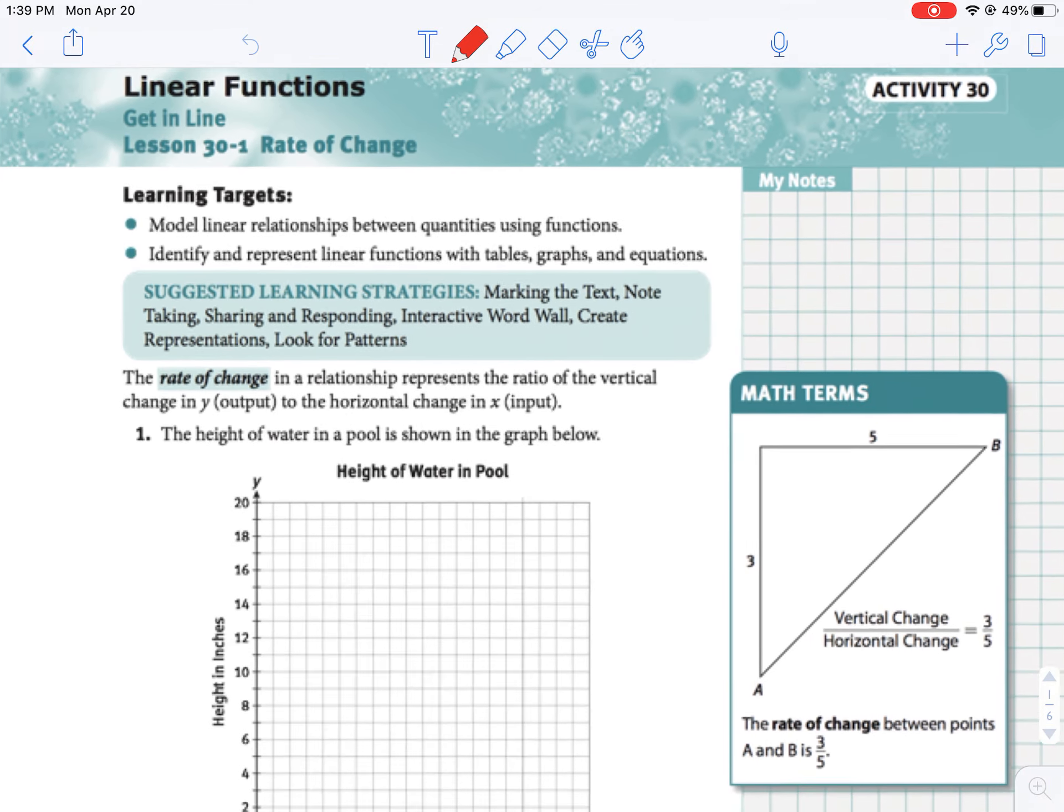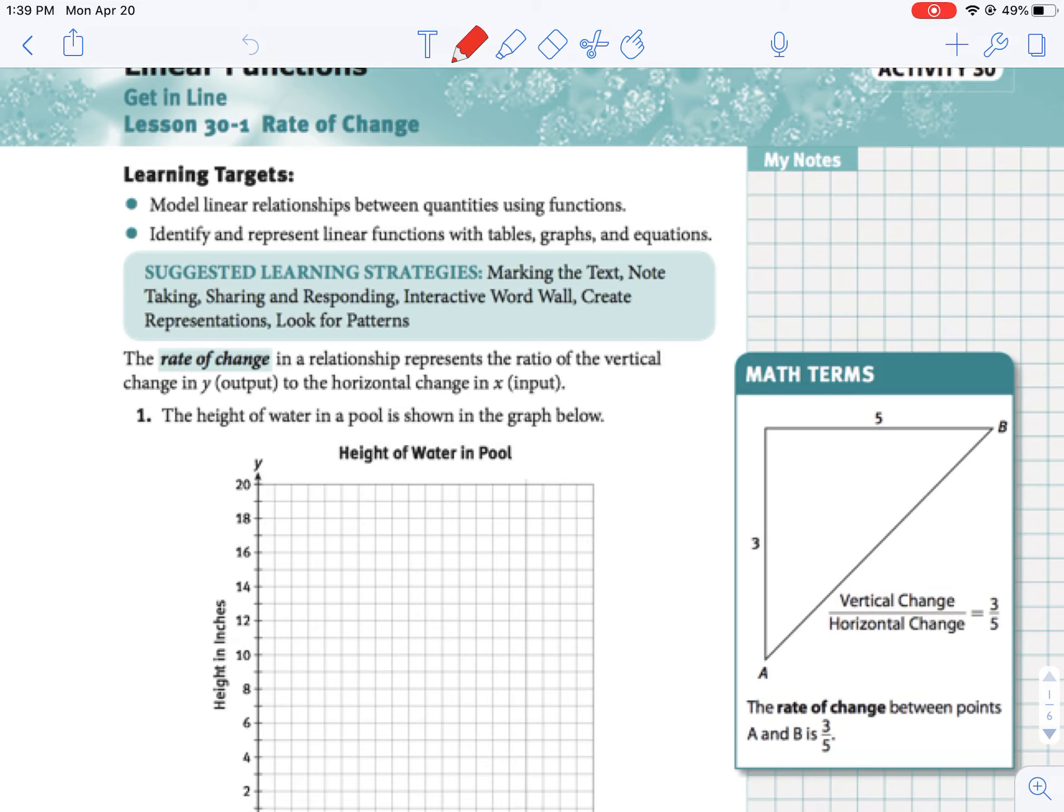If we take a look at the definition, it says rate of change is a relationship that matches or a ratio of the change in Y over the change in X. So one of the things that you might have on your word wall is that rate of change is equal to the change in Y over the change in X.